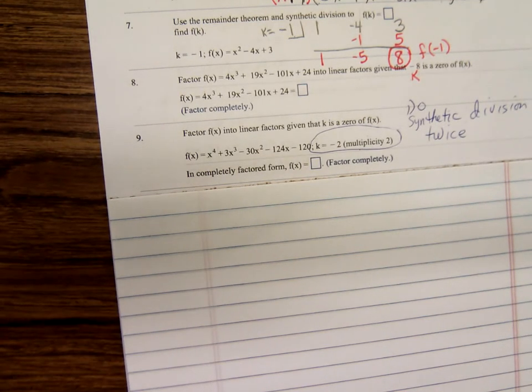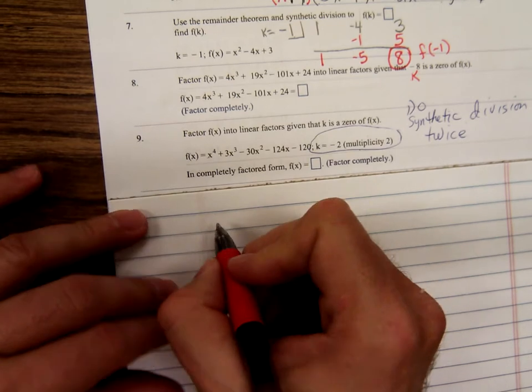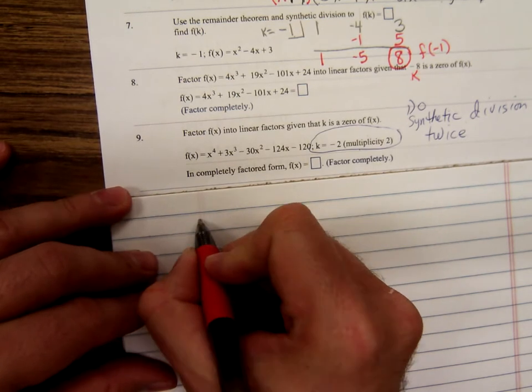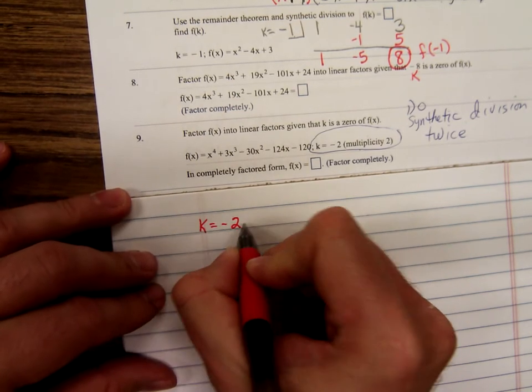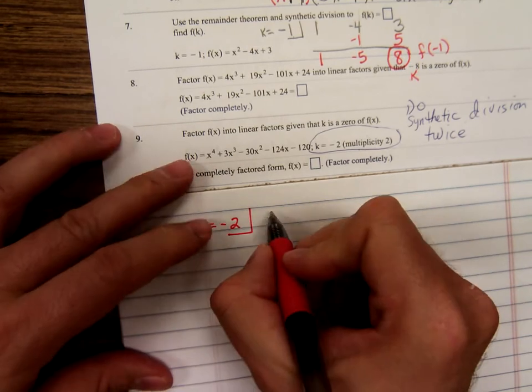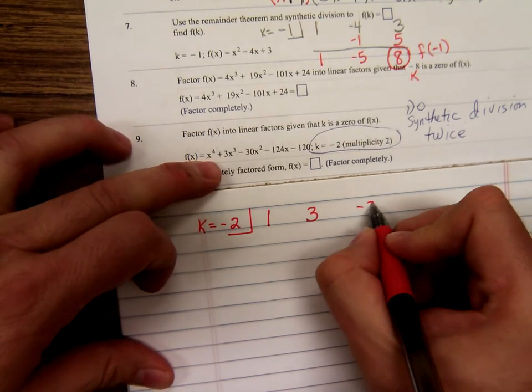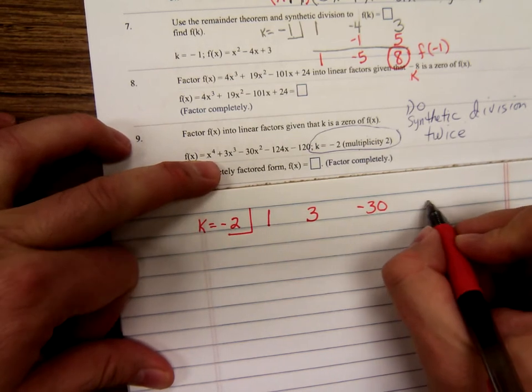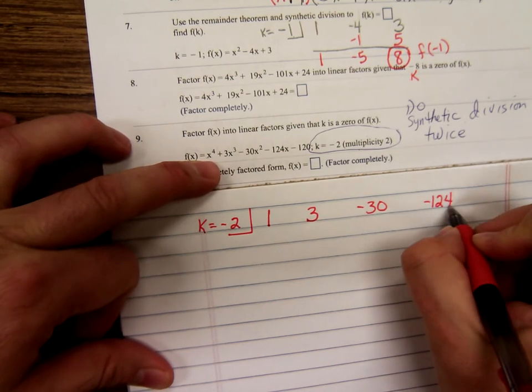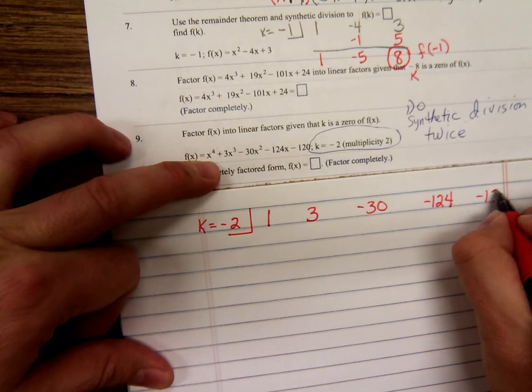And instead of just x minus k being a factor, x minus k is going to be a factor twice. So, it's going to be x minus k squared, but we'll get to that in a moment. So, first, write out k equals negative two, one x a fourth, three x a third, minus 30 x squared, minus 124 x, minus 120.